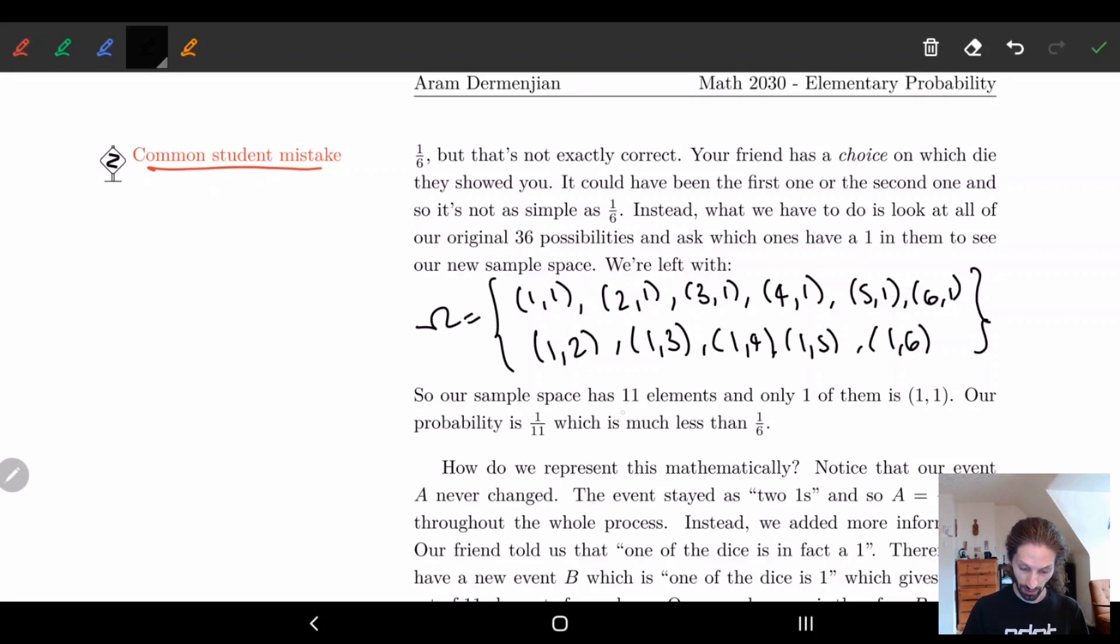And so we have our new sample space. Well our new sample space has eleven elements. And the subset we're looking for is just one of them. It's (1,1). And so our probability P(A) is the size of A divided by the size of omega. So it's 1 over 11. Which is a lot less than 1/6. So basically by your friend doing this they want you to think you have a better chance of solving it when in fact they're making it harder for you to figure it out. It's obviously still better than the 1 in 36. But this is how our brains can manipulate us into thinking that something is possible when something is not. Always think about all the things that are happening.